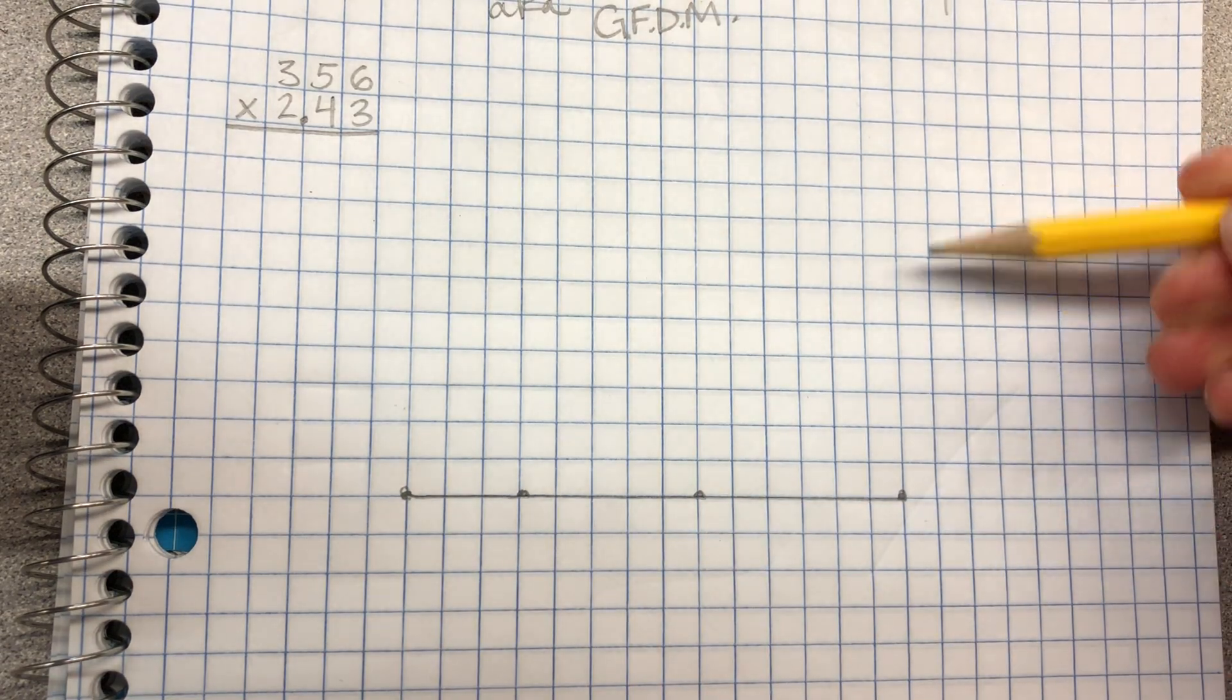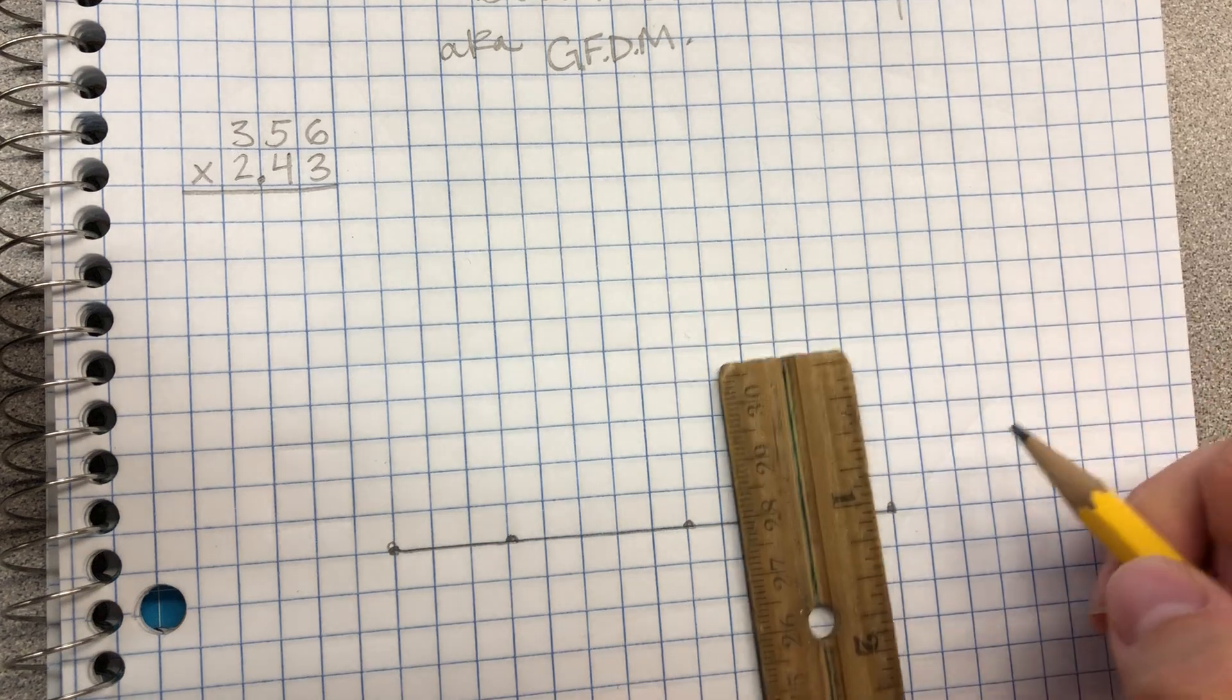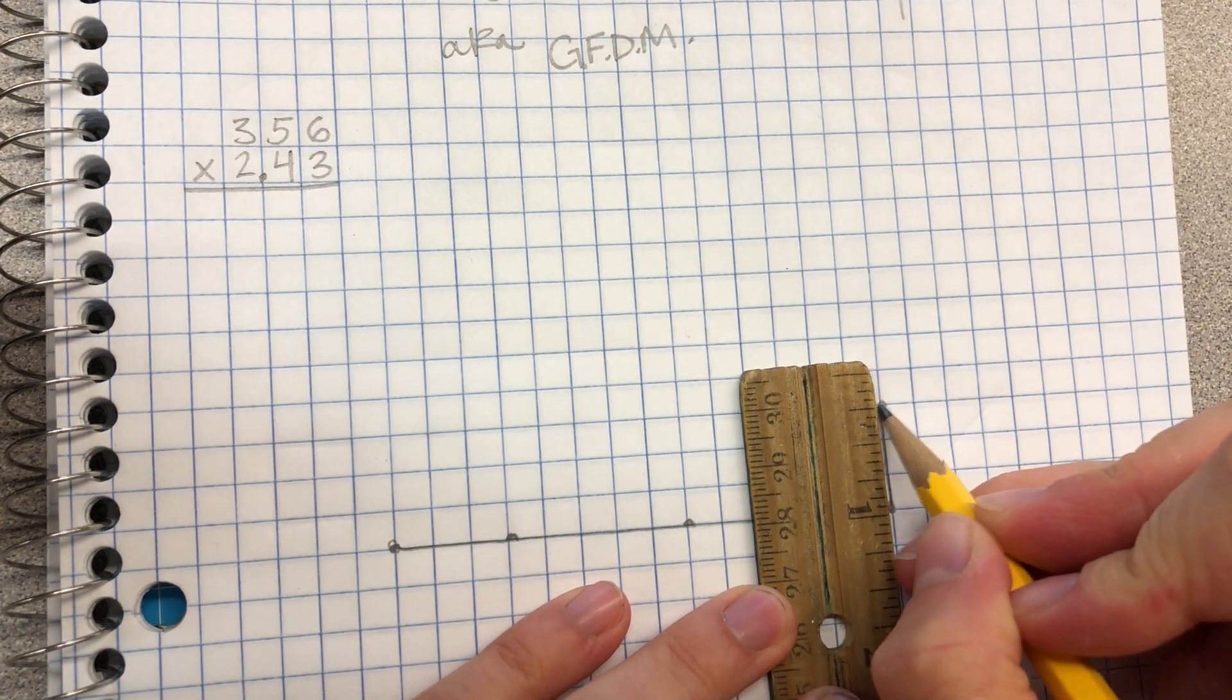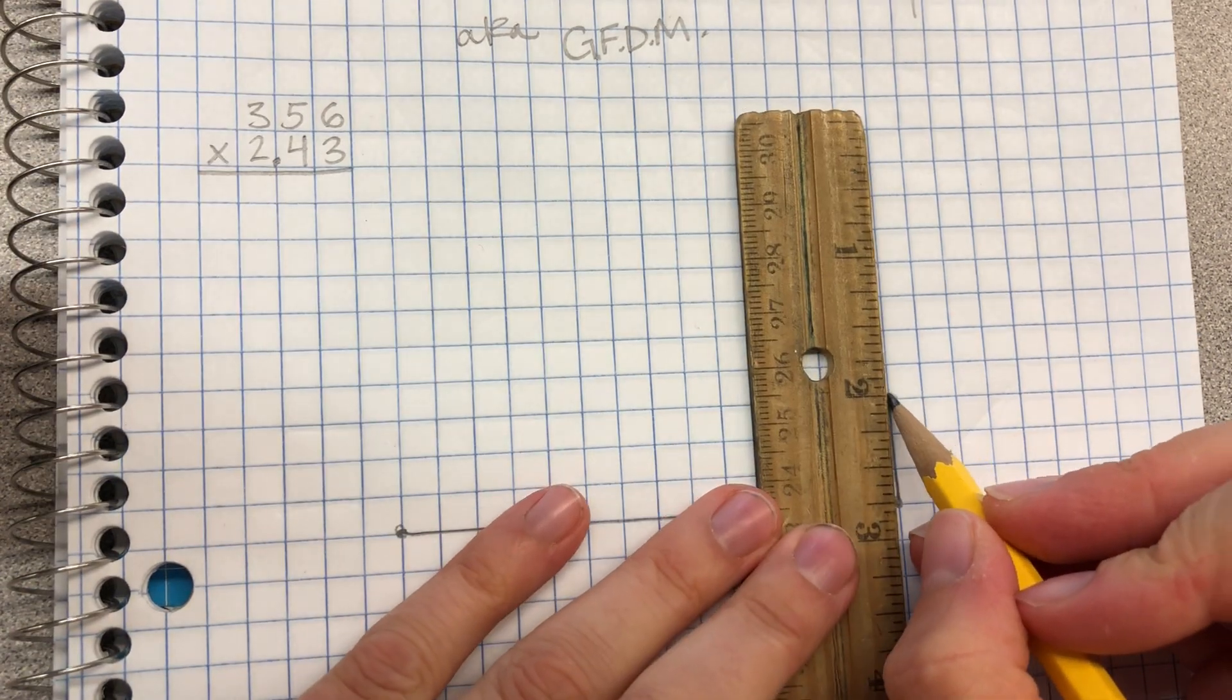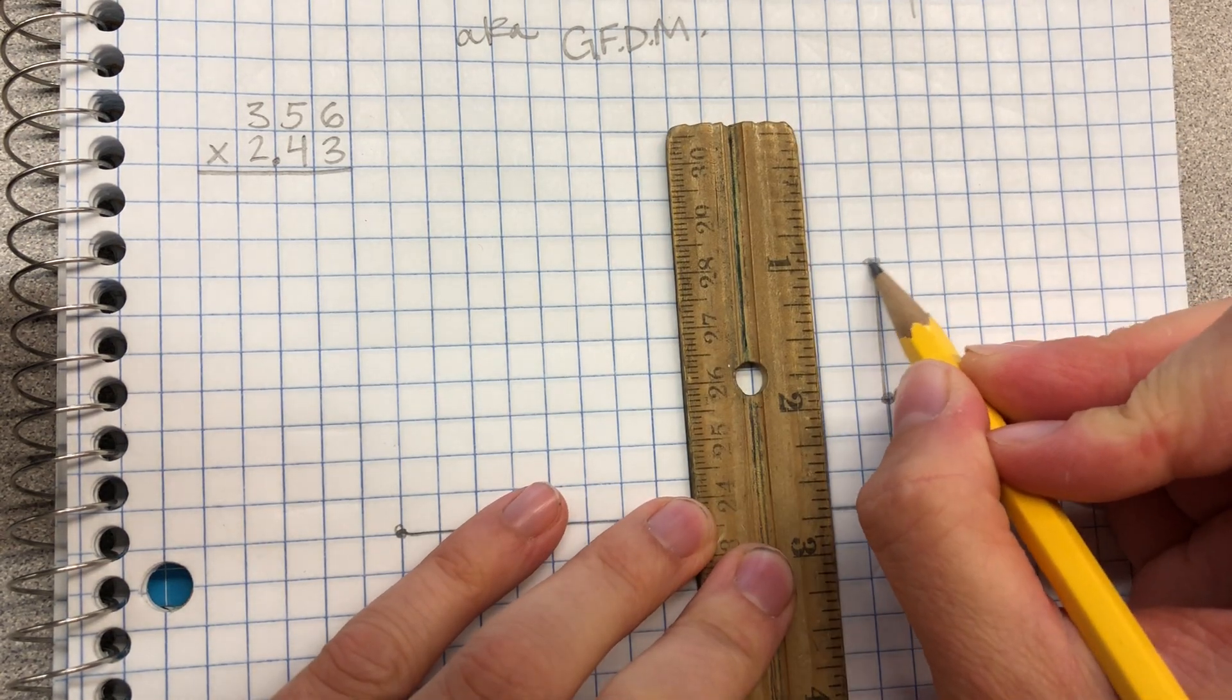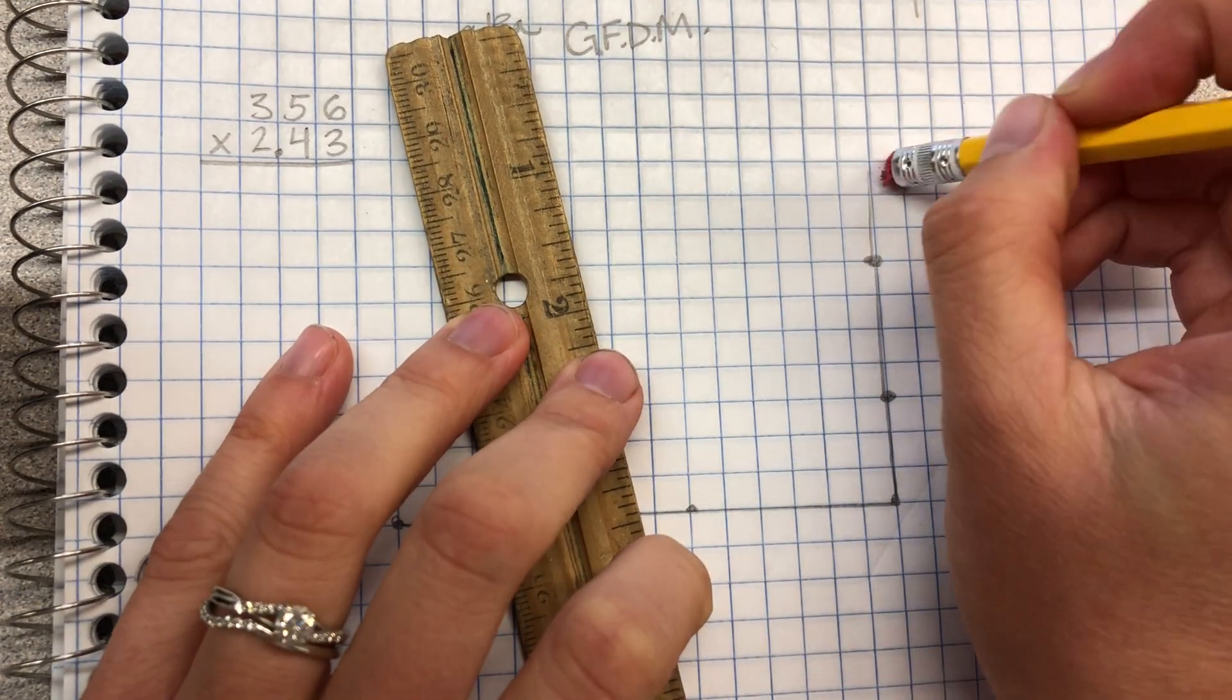Now I go up for my multiplier and I start with the smallest category here which in this case is the 3. 1, 2, 3, make a dot. Next is our tenths which there are 4: 1, 2, 3, 4, make a dot. And our units: 1, 2, make a dot.